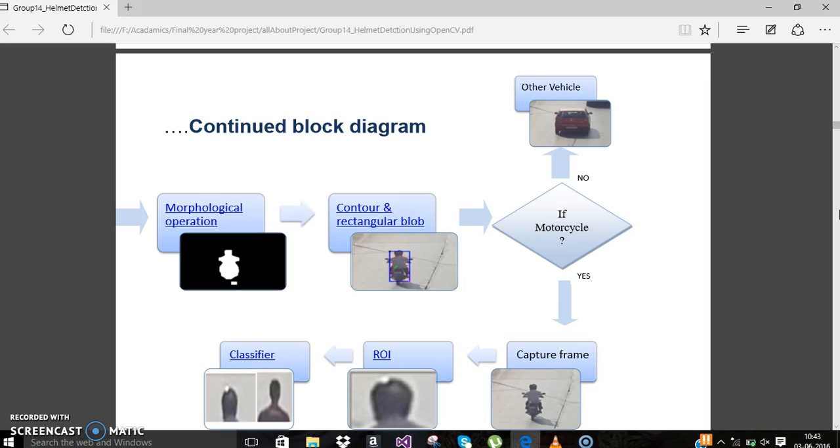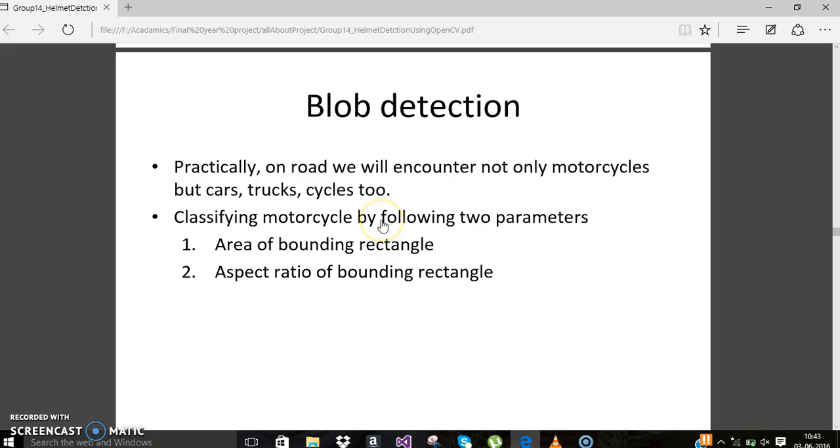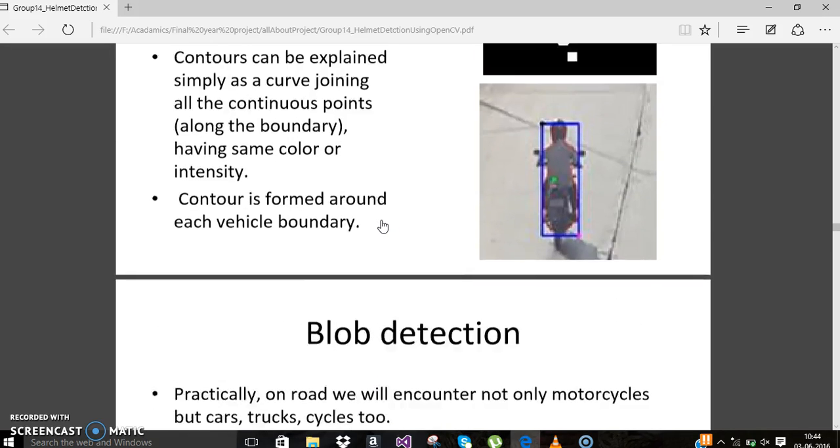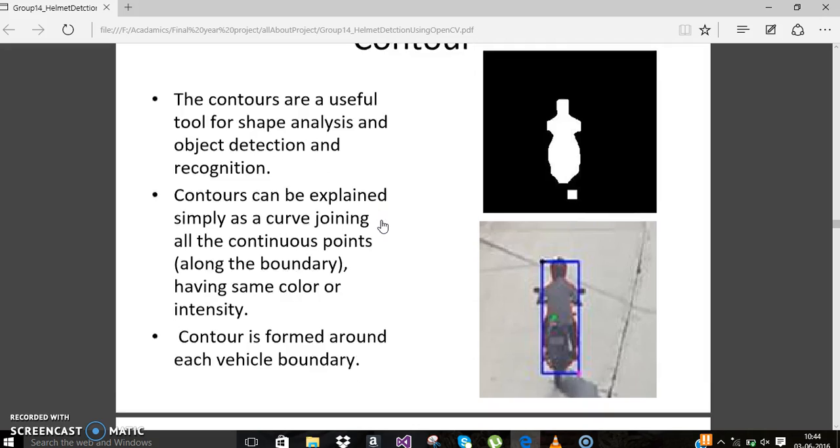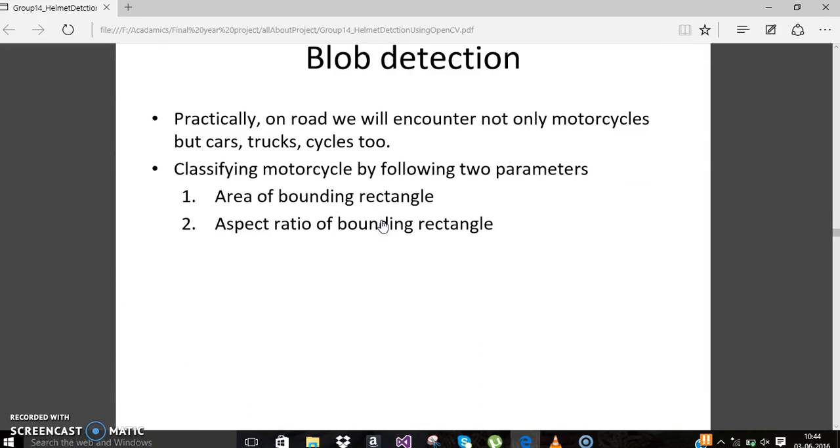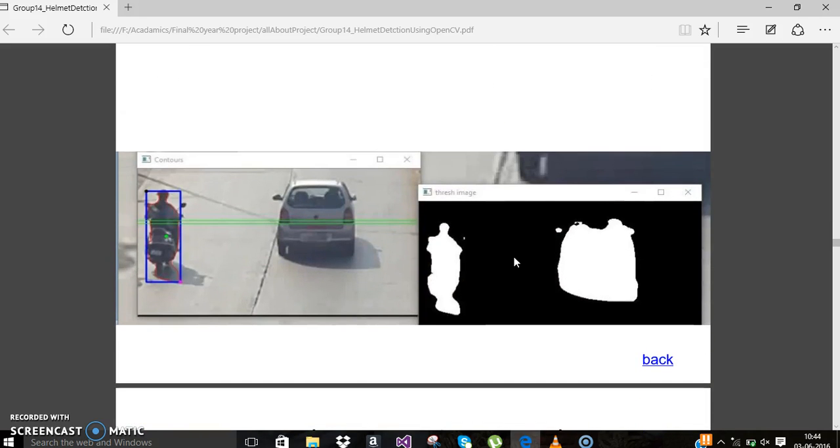After that, it has to be decided whether it is a motorcycle or a car. According to the aspect ratio and the area, we are classifying whether it is a motorcycle or a car. Here you can see there is no blob around the car, but there is a blob around the motorcycle.